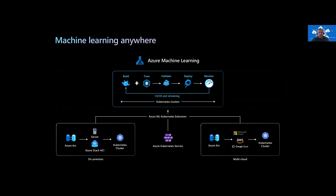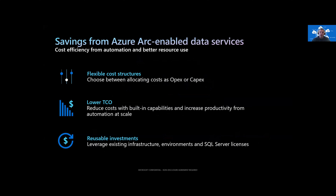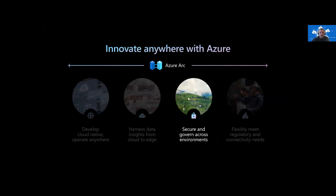We're also enabling you to bring machine learning down to your on-premise environments. With Azure ML, you can train your model up in the cloud, take it out of Azure, and through Arc push it to on-premise to the Kubernetes of your choice — so now you can really unlock insights from your data. This provides flexible cost structures between the public cloud and hyper-converged infrastructure. You lower your TCO with automated resiliency and operations, and you can reuse existing investments with Azure hybrid benefits and software assurance.